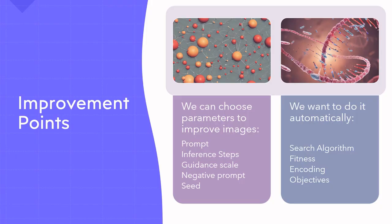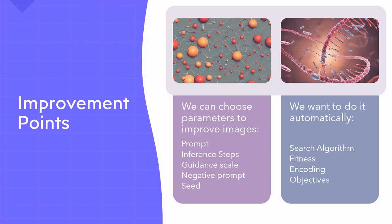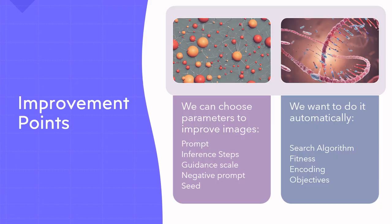Now we want to do this automatically and apply a search component. For that we need a search algorithm. We need to define the algorithm, a fitness function to measure image quality, and an encoding of individuals. Each individual will be a set of parameters — a prompt and a negative prompt — and we are going to evaluate each configuration in the system. Finally, we will have objectives of improvement: the different objects created in the image whose quality we want to increase.